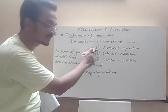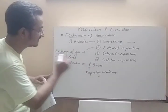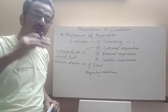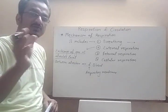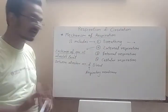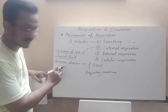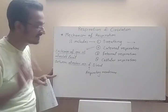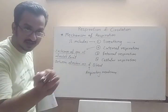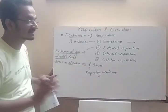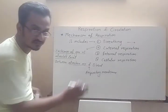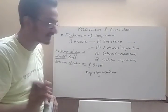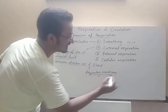External respiration may also be called as exchange of gas at alveolar level. This means the exchange of gas that takes place between the alveoli and the blood present outside the alveoli. The barrier or membrane between the two, through which oxygen and carbon dioxide cross, is called the respiratory membrane.